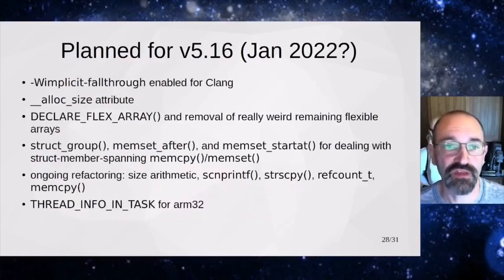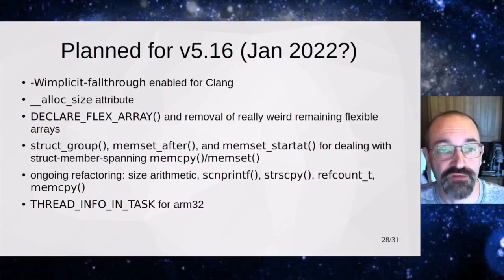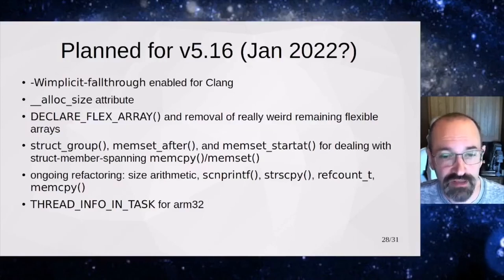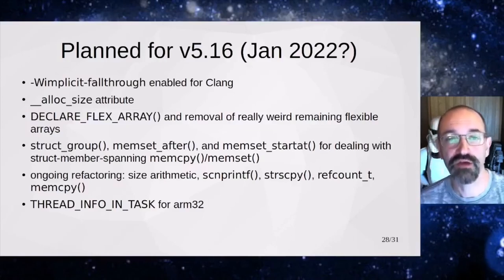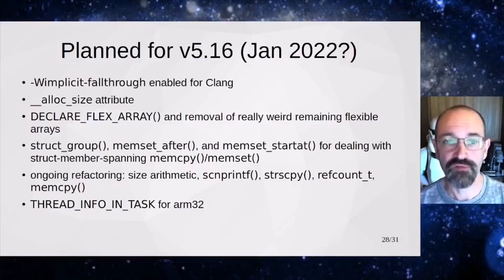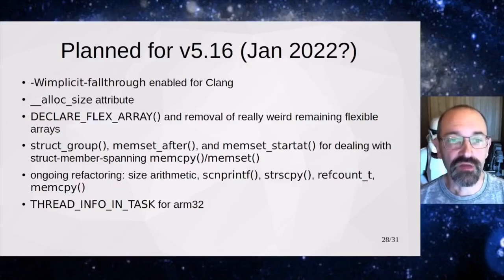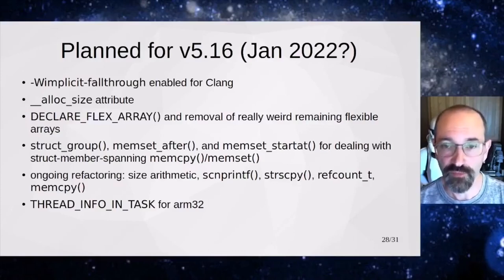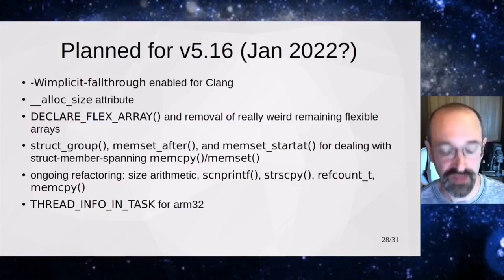Planned for 5.16 — the stuff sitting in next — we've got implicit fallthrough enabled for Clang, so all the implicit fallthrough work should be finished. The alloc size attributes got added to the allocators giving the compiler more hints for compile-time checking. There's a helper being added for dealing with flexible arrays in unusual situations — alone in a structure, as part of a union — as well as a way to specify a subgroup of members within a structure and additional memset helpers. There's also thread info in the task for ARM32, and a bunch of other soon and not-so-soon features on the list.